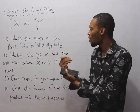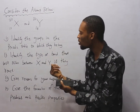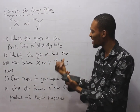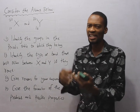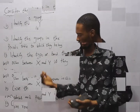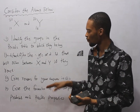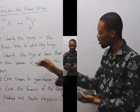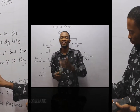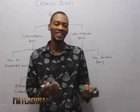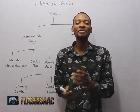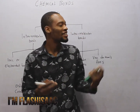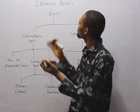Identify the type of bond that will occur between S and Y if they react, and give reasons for your answer. Welcome to a chemistry class with Flash Isaac; today I'll be taking you through chemical bonds.